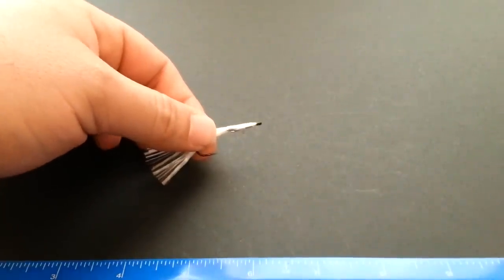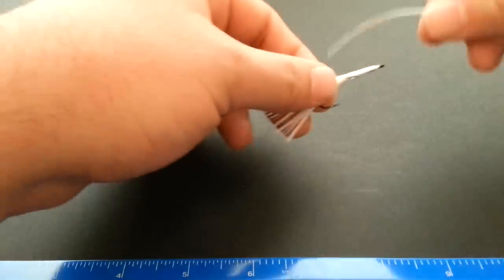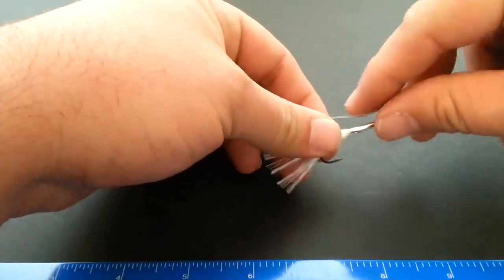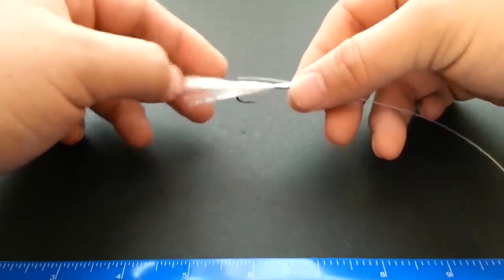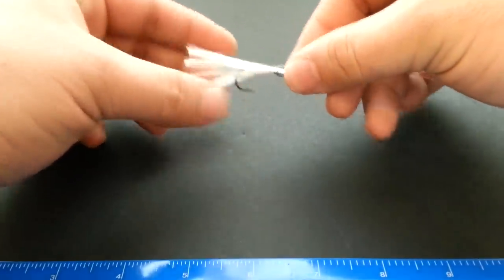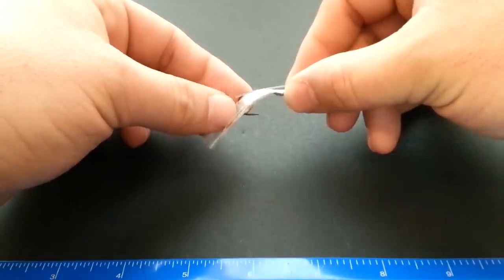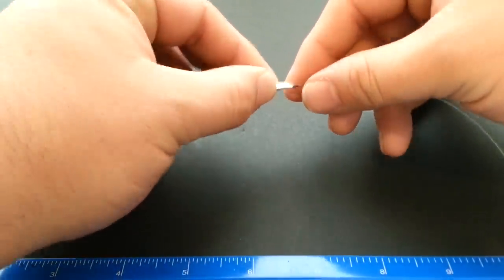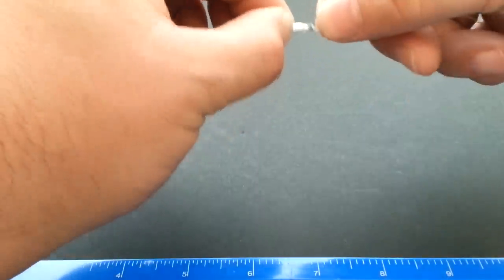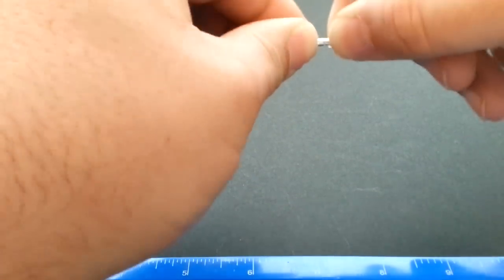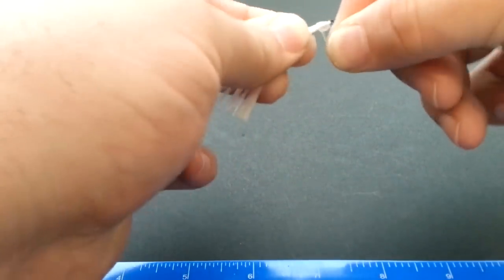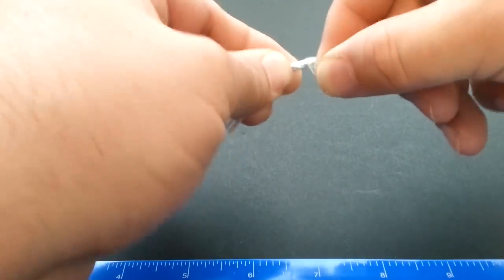This is where we find out how closely you were paying attention in the last video. So run your line parallel with your hook shank down roughly where the bend of the hook is, then just start wrapping your line back down the shank of your hook.